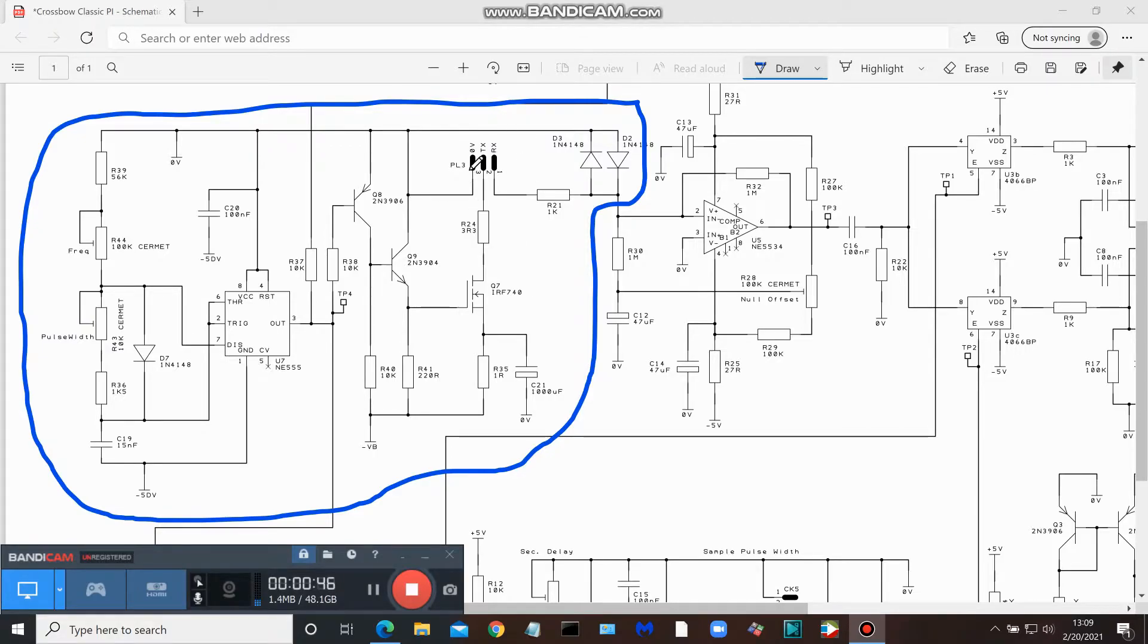Up here PL3, this is our coil connection. And over here we have a couple of multi-turn trim pots. R44 is how you adjust the frequency. It's a 100k multi-turn trim pot. And right below it is R43 and that's how we go about adjusting the pulse width. And that's a 10k trim pot.